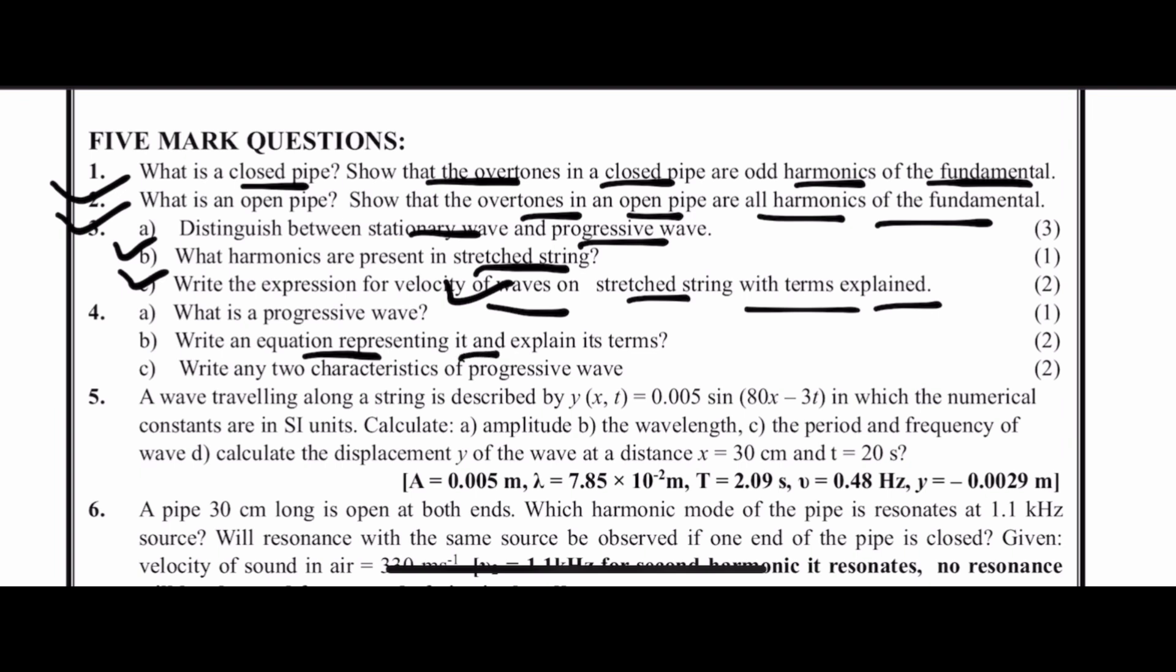Next condition b is write an equation representing it and explain its terms, meaning progressive wave equation. Write any two characteristics of progressive wave. This is a split type question.